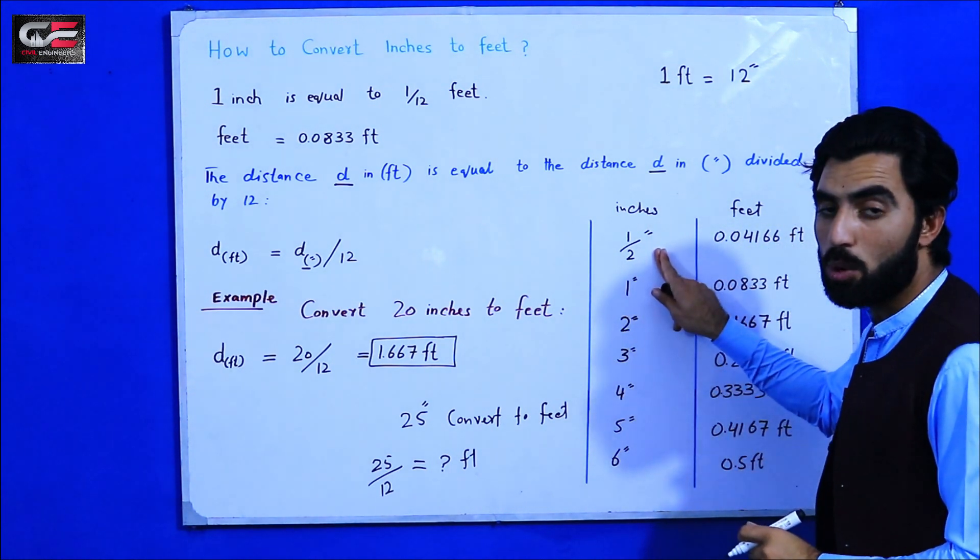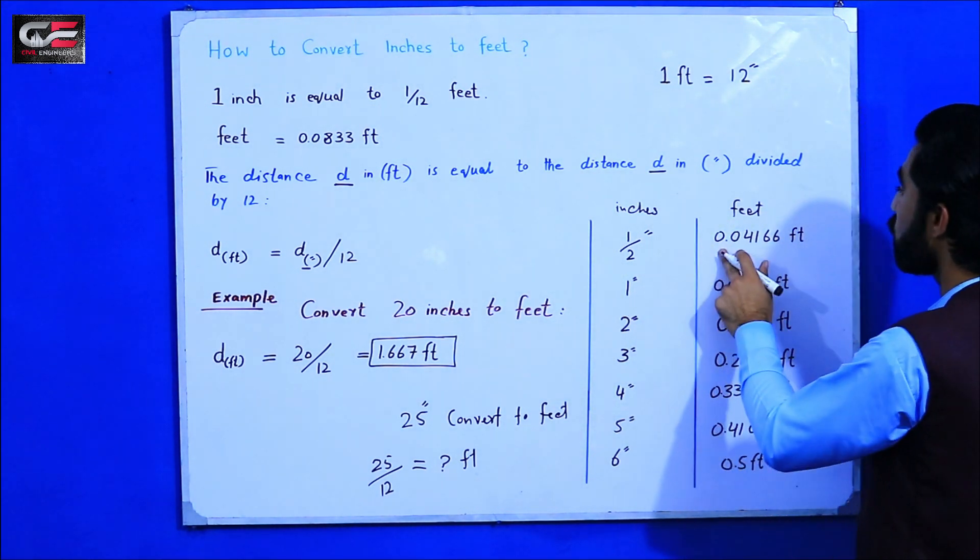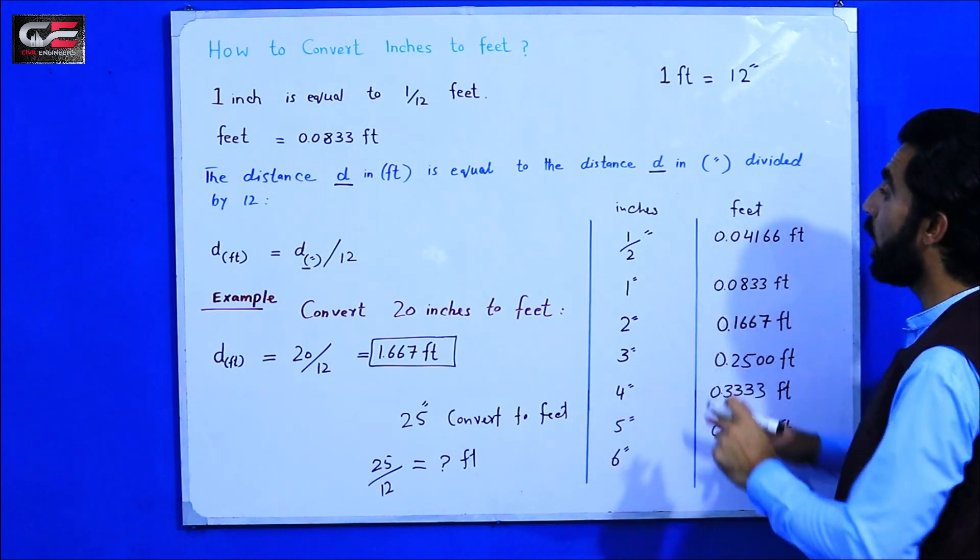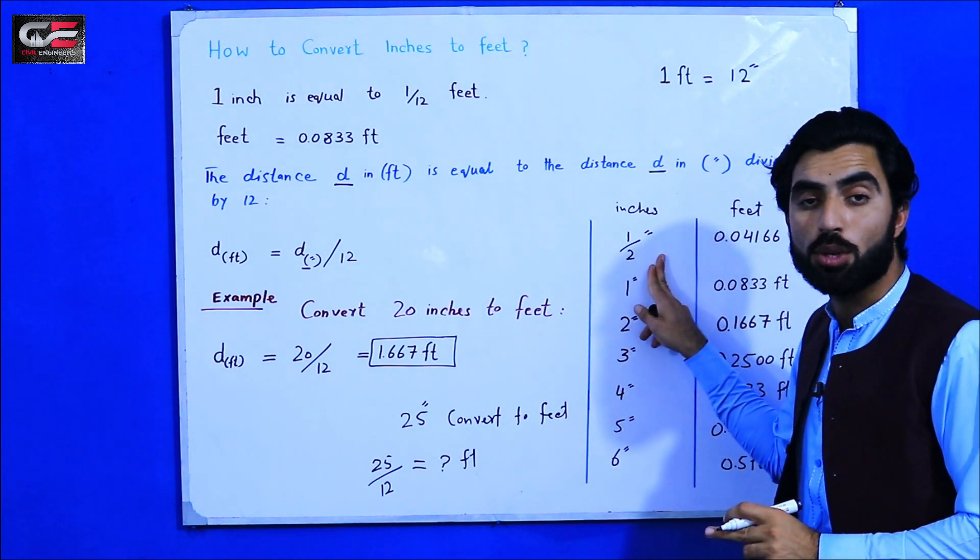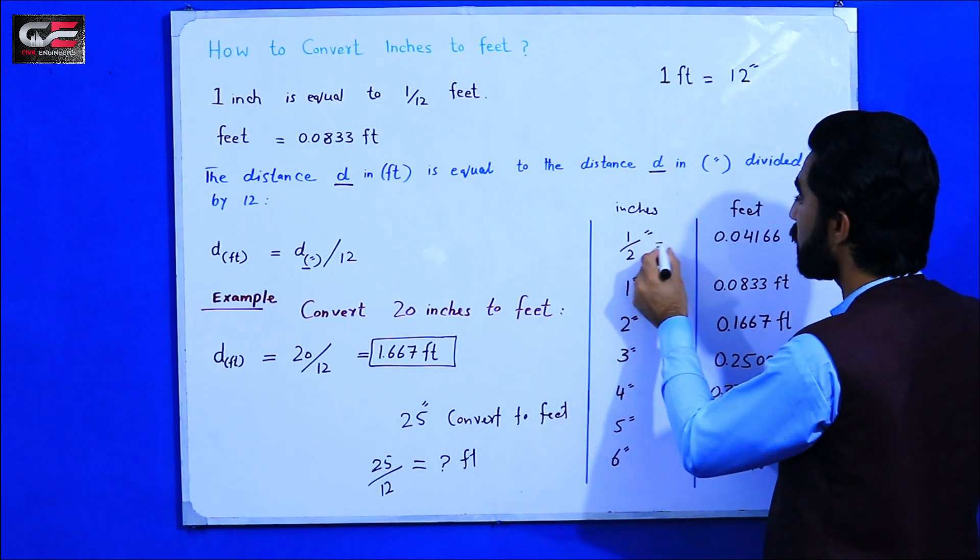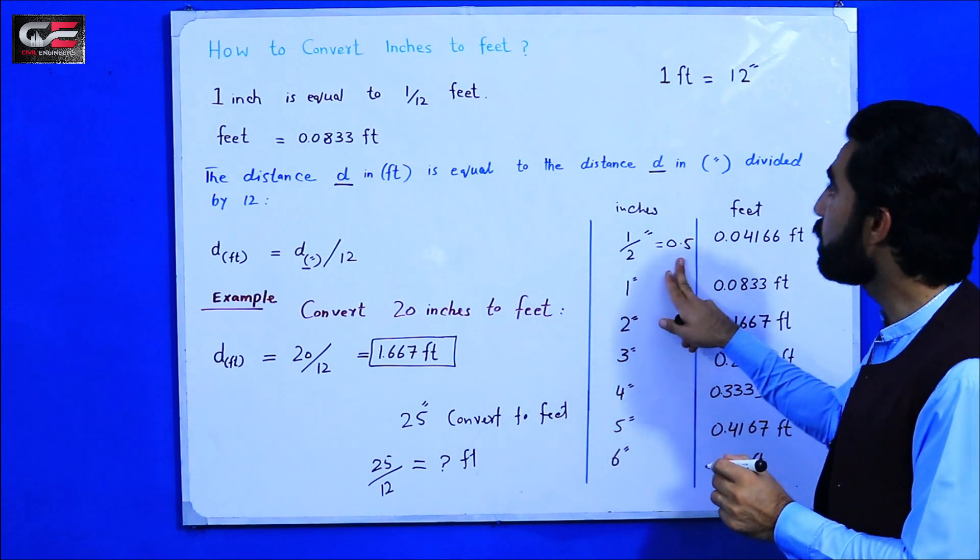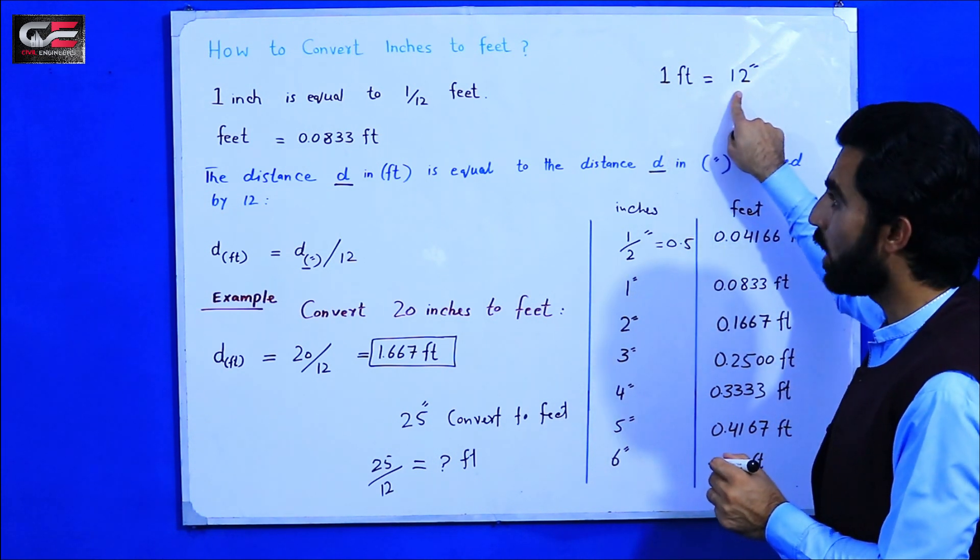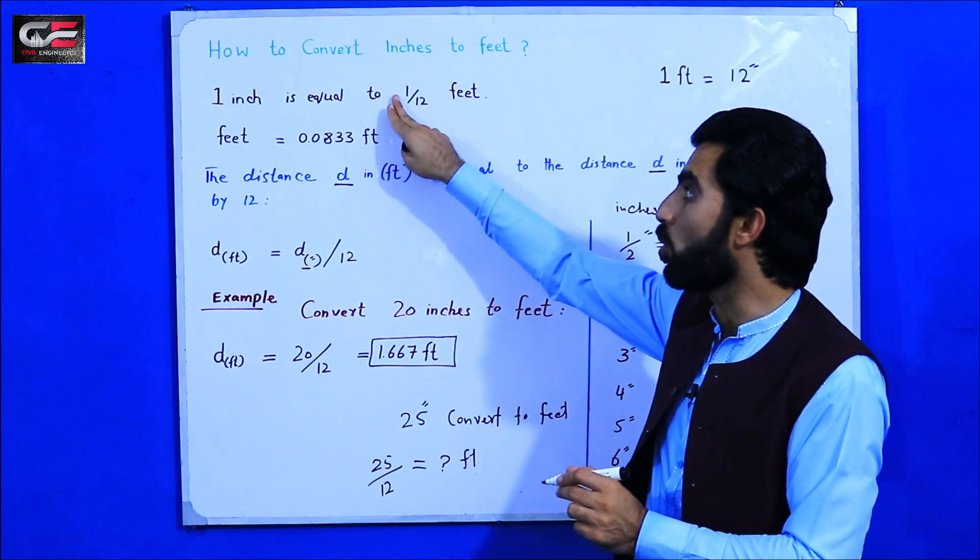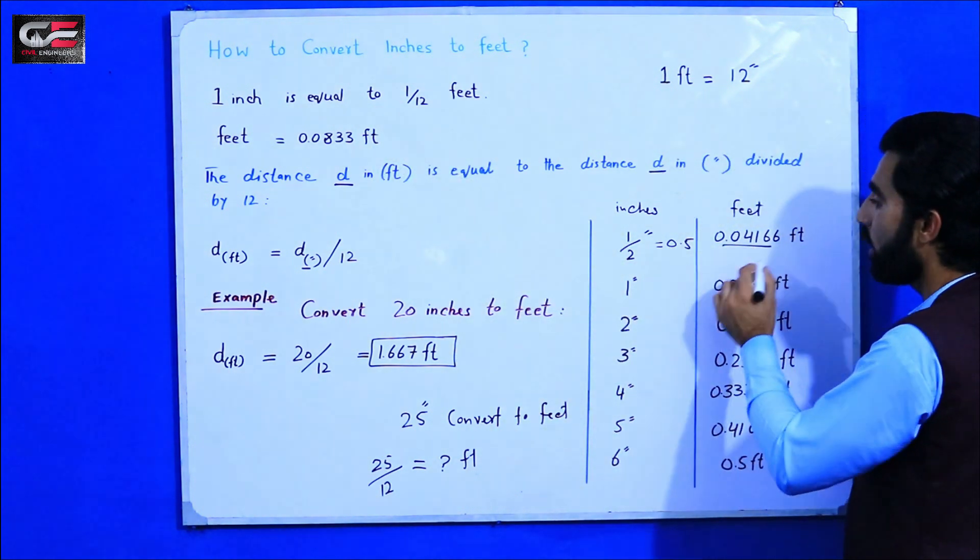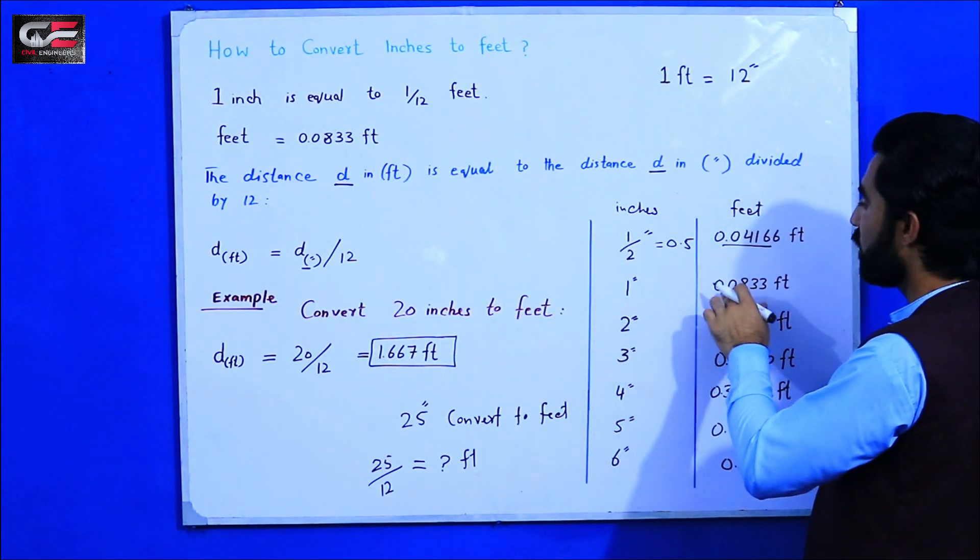Half inch or 1/2 inch is equal to 0.04166. How you can get this value? When you divide 1 by 2, you get 0.5. When you divide it by 12, because 1 foot is equal to 12 inches, you will get this value.